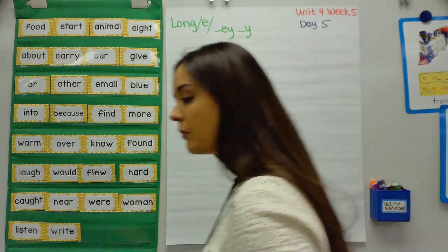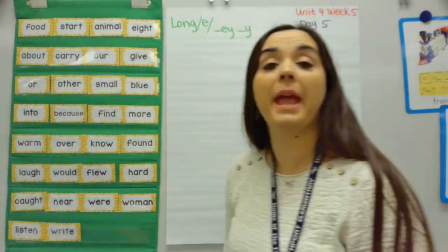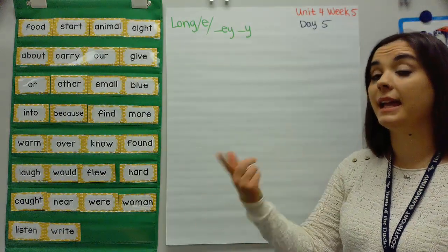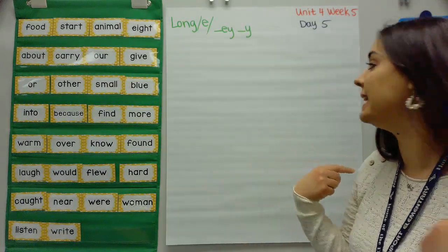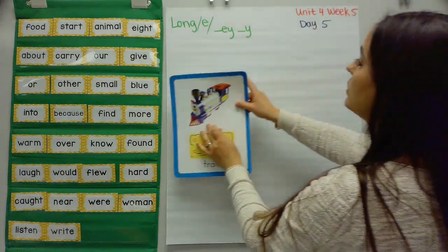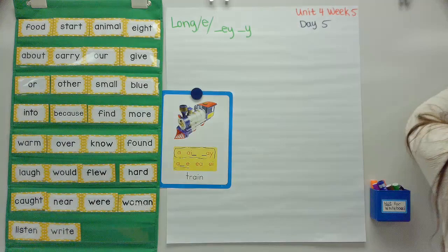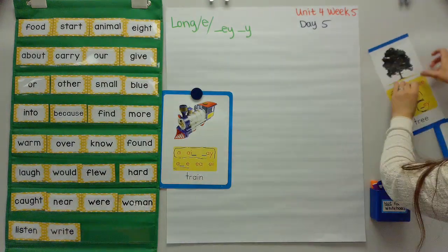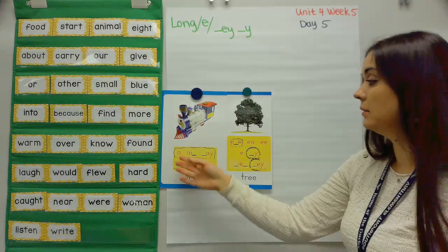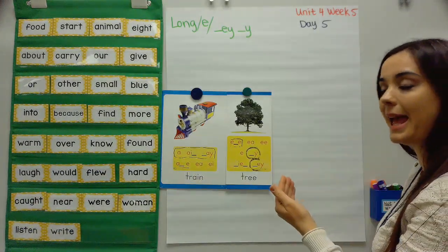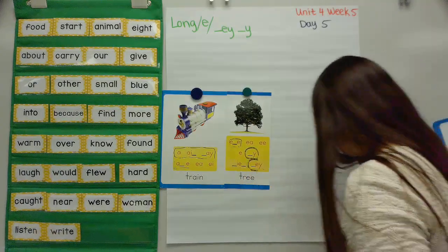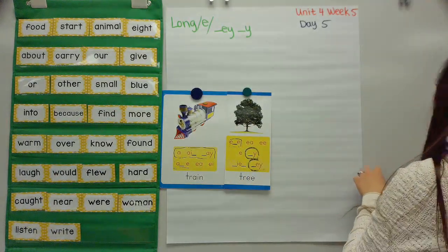Excellent, let's do blending. Okay, first word: baby. Your turn. Buh - A - Buh - E. Baby. So this word baby has two long sounds that you hear when you say it. When you say baby, you hear long A — it's the first sound: Buh-A. And then Buh-E — baby. That is the long E sound.